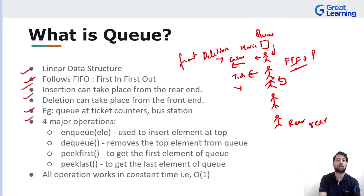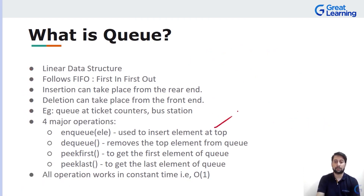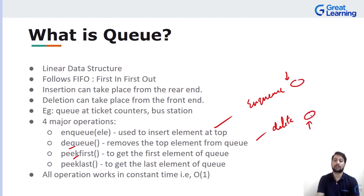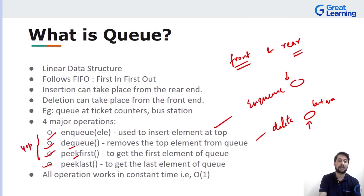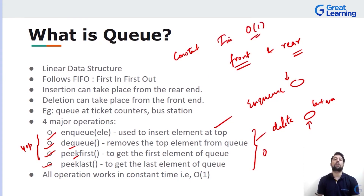There are four major operations on a queue: enqueue — inserting an element into the queue; dequeue — deleting an element from the queue; peek first — viewing the first element in the queue; and peek last — viewing the last element. You have two pointers, one for front and one for rear. One major advantage is that all four of these operations are performed in a constant amount of time, meaning the time complexity is O(1). That is why queue is most commonly used in competitive programming.